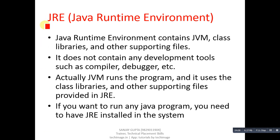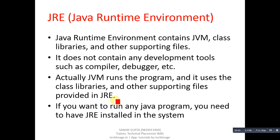The next heading is JRE, which stands for Java Runtime Environment. Java Runtime Environment contains JVM, class libraries, and other supporting files. As you can see, JVM is a part of JRE. JRE has library files and other supporting files already available with it, but it does not contain any development tools such as a compiler or debugger. JVM runs the program using the class libraries and supporting files provided in JRE. If you want to run any Java program, you need JRE installed on your system.